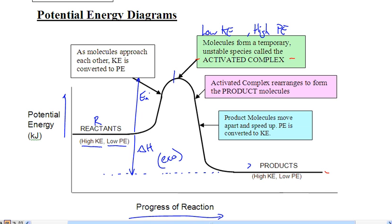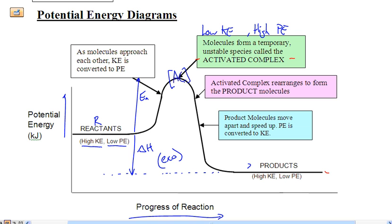If the reactants collide with energy greater than or equal to the EA, they will have a successful collision and form products. They form a little intermediate compound at the top called an activated complex — written as AC in square brackets. Square brackets around AC means activated complex: a super temporary, unstable mixture of reactants. If you can form the activated complex, the reaction will be successful and you will form products.